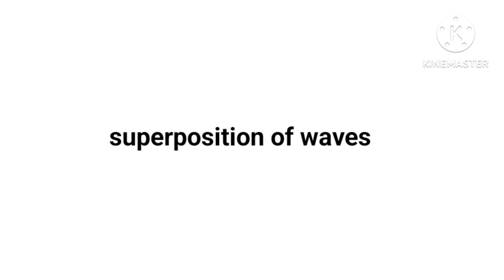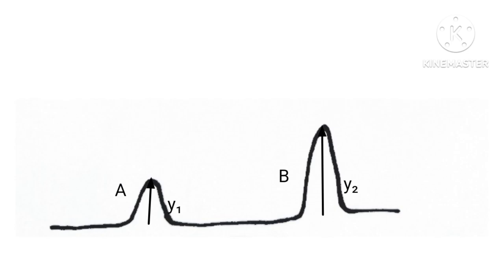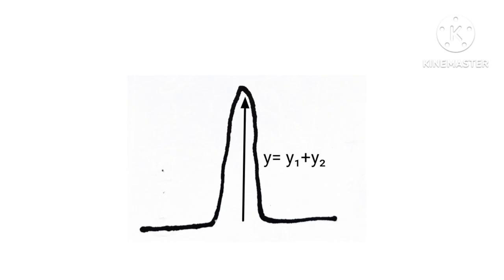In our last video we learned about waves. Now we shall study what happens when two wave pulses A and B traveling in opposite directions cross each other. As they overlap, the wave pulses continue to retain their identities.